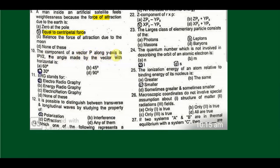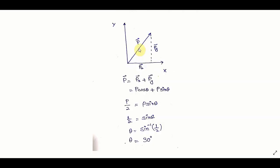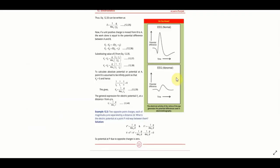The component of a vector p along y-axis is p by 2, the angle made by vector with the horizontal is: we have a vector p and it has two components, px and py. px equals p cos theta, py equals p sin theta. In the question, the y component is being asked about, so we will write the y component. The question states that y component is equal to p magnitude by 2 and the angle is being asked. So we will solve it out and equate for theta.